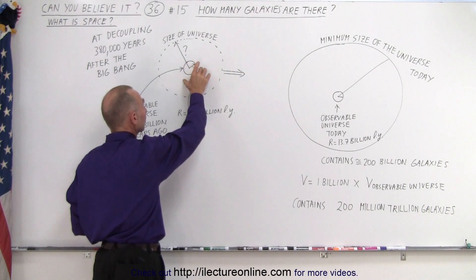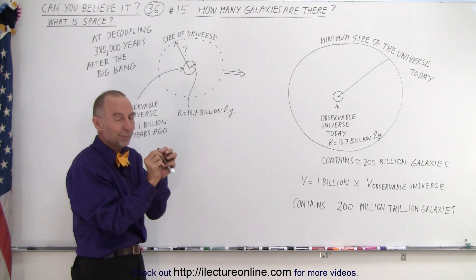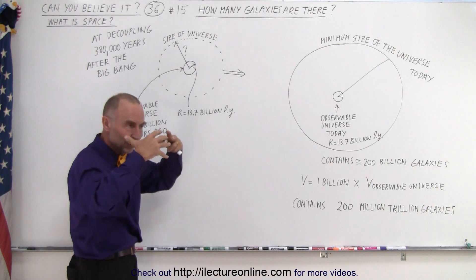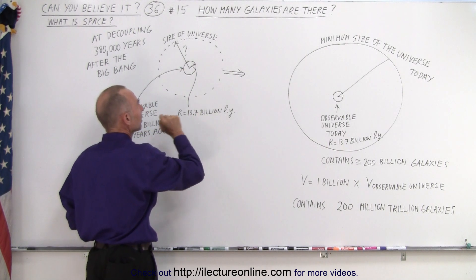And of course back then that wasn't the observable universe because at that point the universe was that old, but today the observable universe has a radius of 13.7 billion light years.